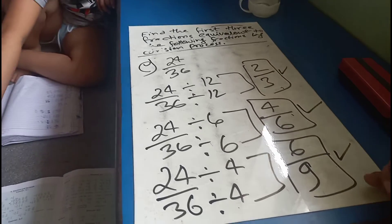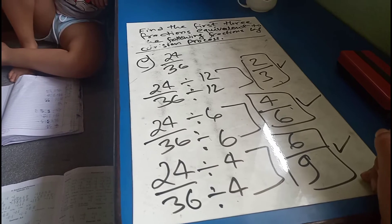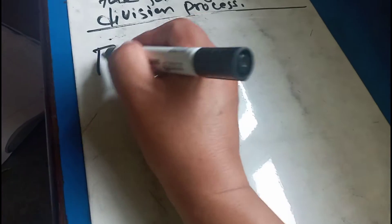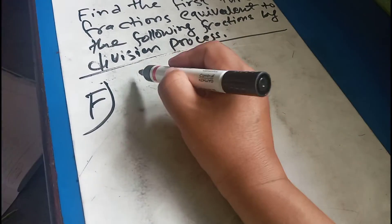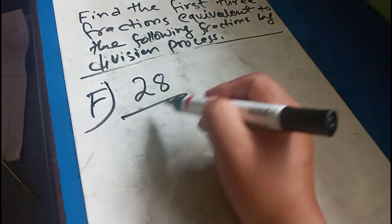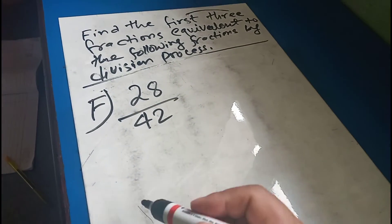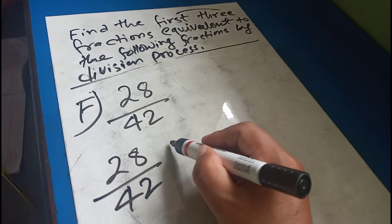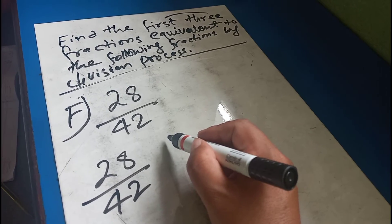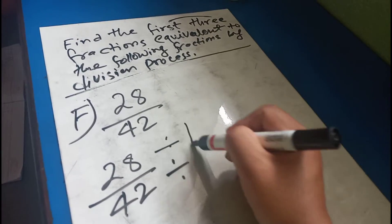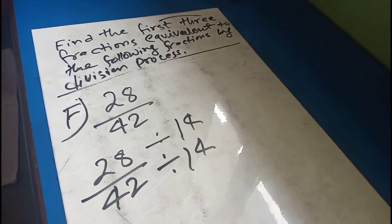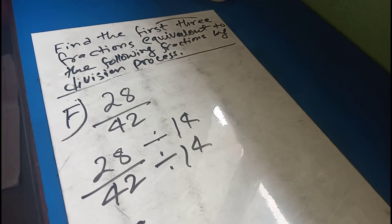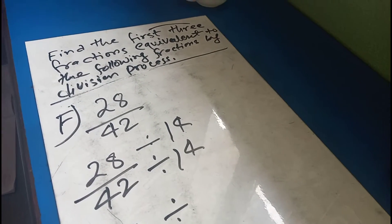Fractions 1, 2, 3 are here. How much is this? 20, 42. 28, 42. 14. 14. 42. 7.